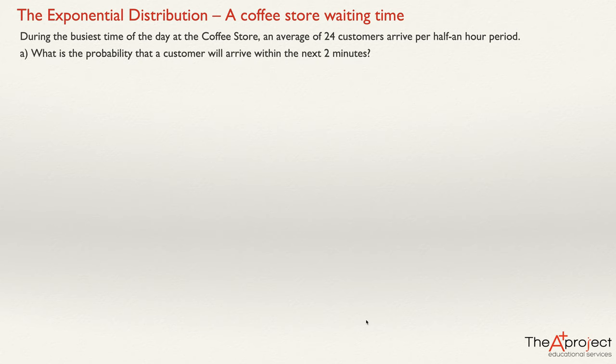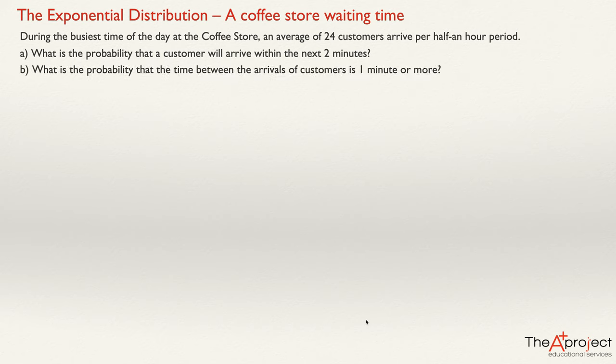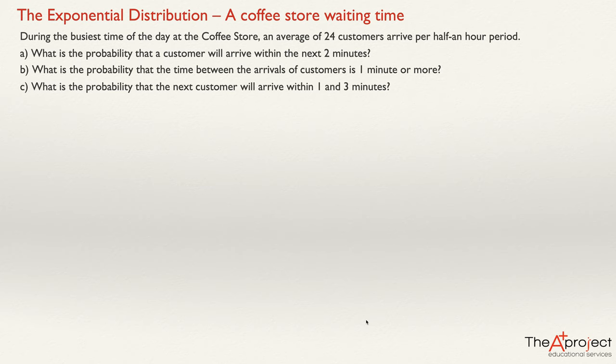Question A: What is the probability that a customer will arrive within the next two minutes? Question B: What is the probability that the time between the arrivals of customers is one minute or more? And Question C: What is the probability that the next customer will arrive within one and three minutes?